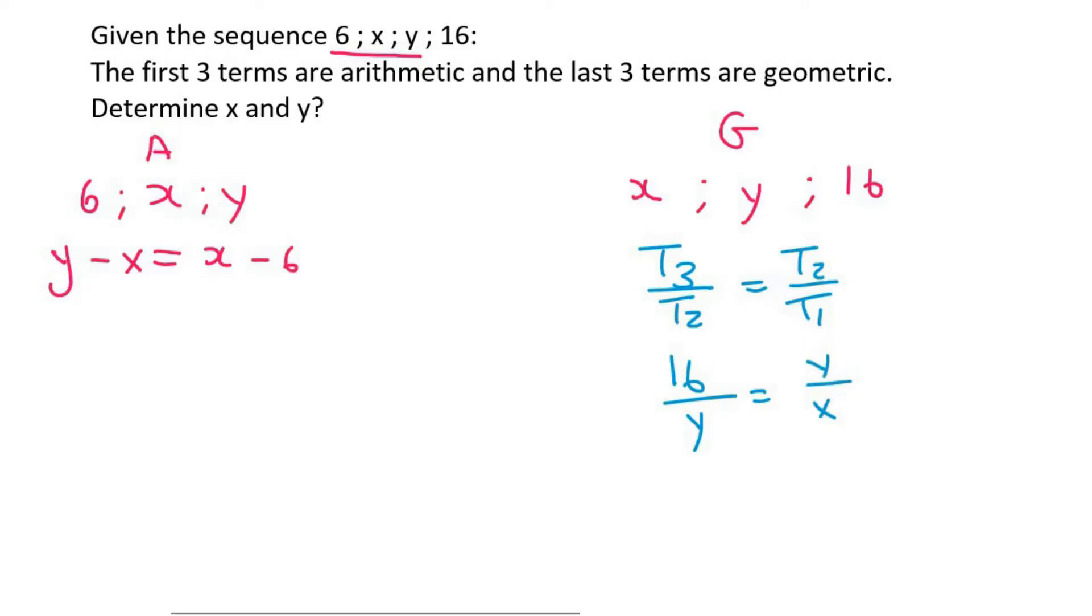Now what I'm going to do is just try and neaten everything up. So these x's can go together. So we would actually get y equals 2x minus 6. And then on this side over here, I'm going to cross multiply. So we'll get 16x equals y squared.